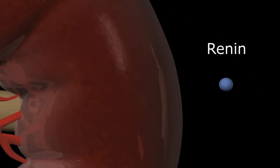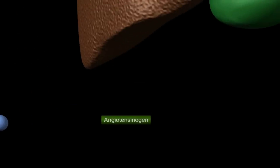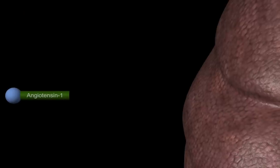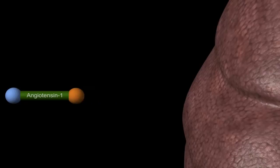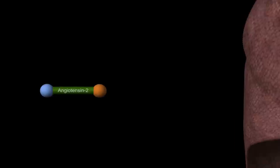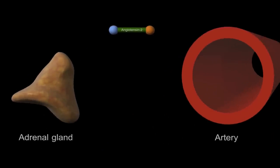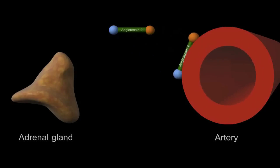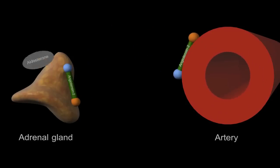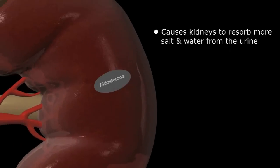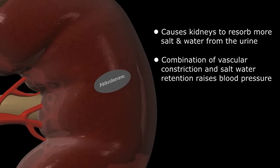A drop in blood pressure, either systemically from heart failure or locally from a narrowing of the renal artery, causes the kidney to secrete a chemical called renin into the bloodstream. Renin then links to a protein hormone produced in the liver called angiotensinogen, converting it to angiotensin 1. A second enzyme produced in the lungs called angiotensin-converting enzyme, or ACE, then links to angiotensin 1, converting it to angiotensin 2, the active configuration of the hormone. Angiotensin 2 then acts on both the peripheral arteries and the adrenal glands. The arteries constrict, and the adrenal glands produce aldosterone, which causes the kidneys to absorb more salt and water from the urine, raising systemic blood pressure and restoring blood flow to the compromised kidney.